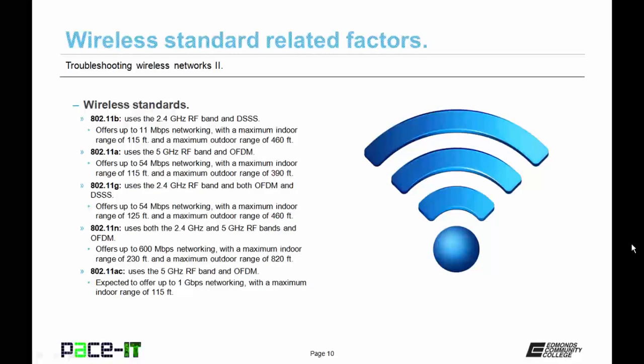802.11b uses the 2.4 GHz RF band and DSSS as its form of modulation. It offers up to 11 Mbps networking with a maximum indoor range of 115 feet and a maximum outdoor range of 460 feet.